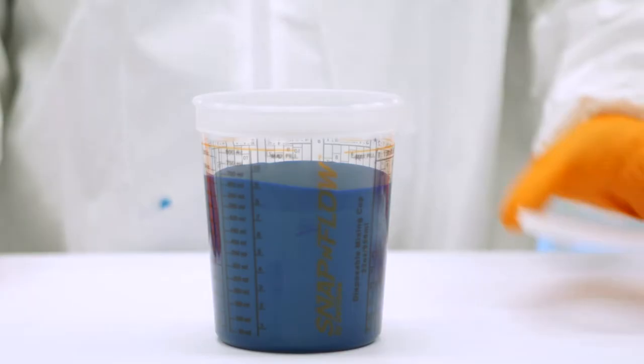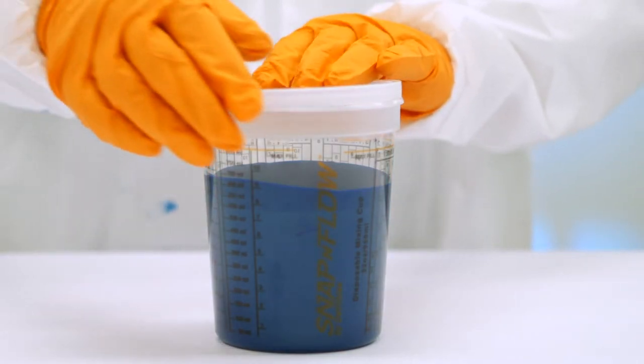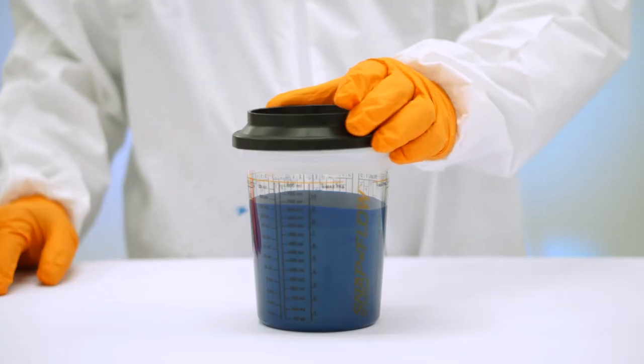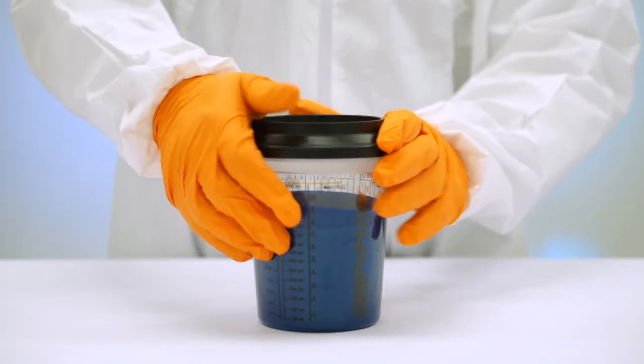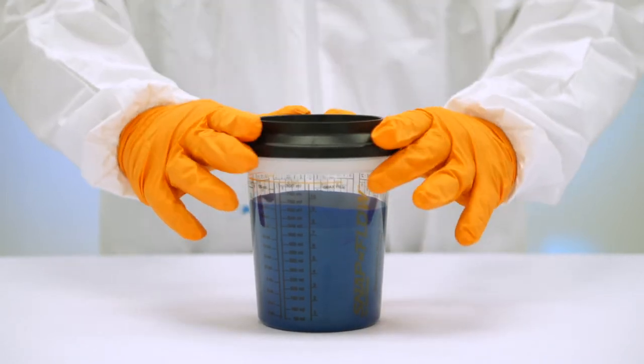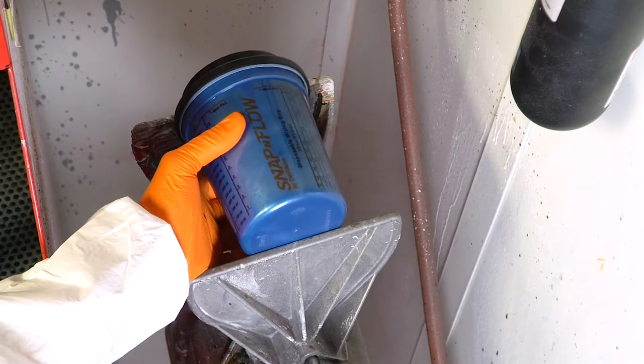If your paint product requires shaking, here are the steps. Place a flat lid on the cup. It will snap in place. Place the Snap and Flow shaker adapter over the flat lid. It provides a tight friction fit. Place this in the shaker.